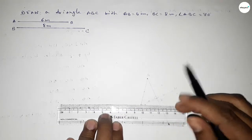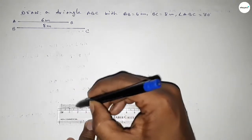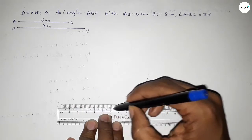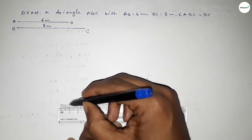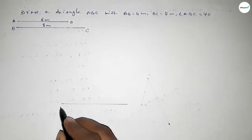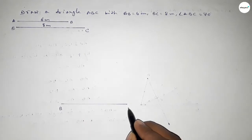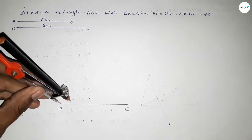Now we have to draw a line of length 8 centimeters: 0, 1, 2, 3, 4, 5, 6, 7, 8. Taking point B here and point C here. Now we have to draw a 70-degree angle at point B.